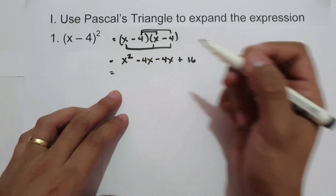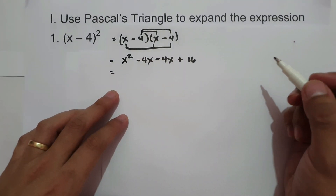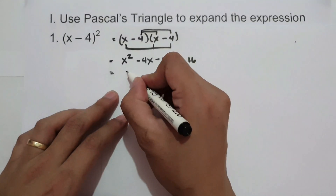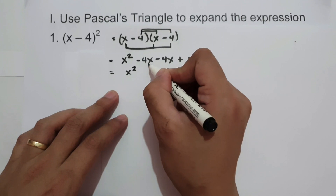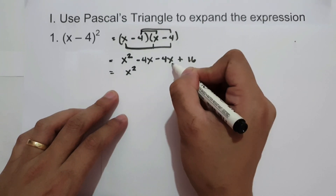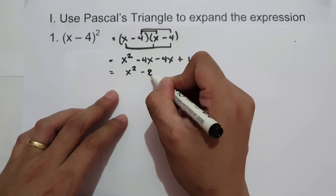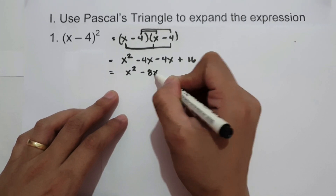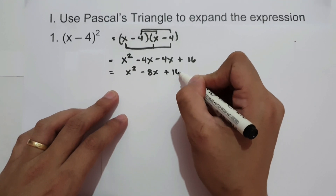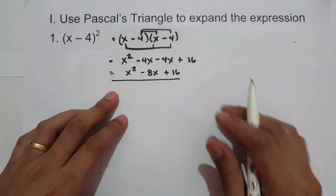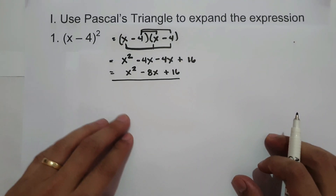Then negative 4 times x is negative 4x, and negative 4 times negative 4 is positive 16. To simplify our answer, let us combine like terms. We have x squared, and negative 4x minus 4x is negative 8x, plus 16. So this will be our final answer.